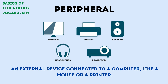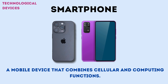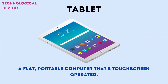A peripheral is an external device connected to a computer, like a mouse or a printer. A smartphone is a mobile device that combines cellular and computing functions. A tablet is a flat, portable computer that's touchscreen-operated.